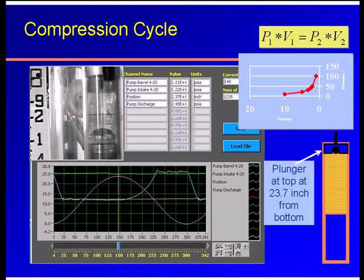Here we have four curves. The sinusoidal curve here is the position of the plunger. So you see we are at the top of the stroke. Here is the bottom of the stroke. The vertical line indicates where we are now. That corresponds to this picture. This line here represents a discharge pressure. The blue line represents the pressure inside the barrel, or the pressure here, and the red line is the pressure below the intake pressure.